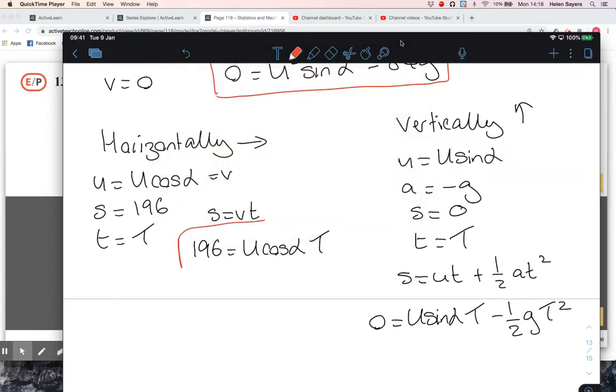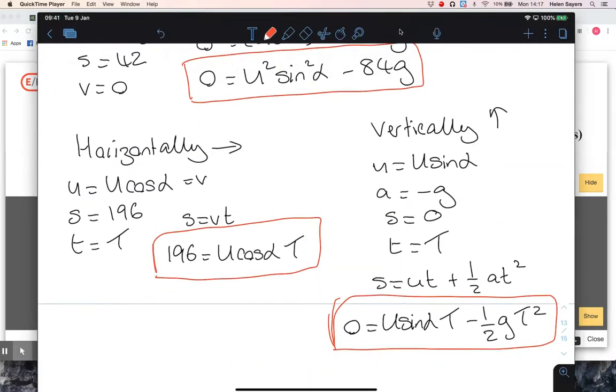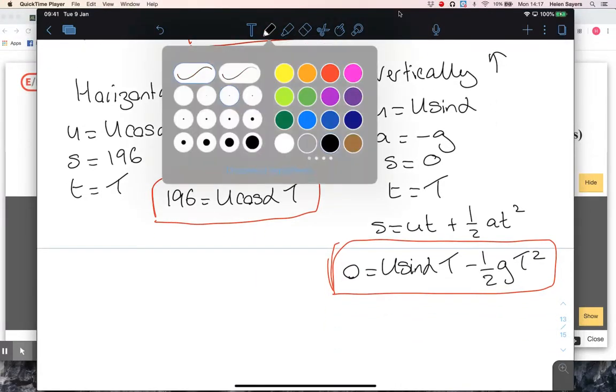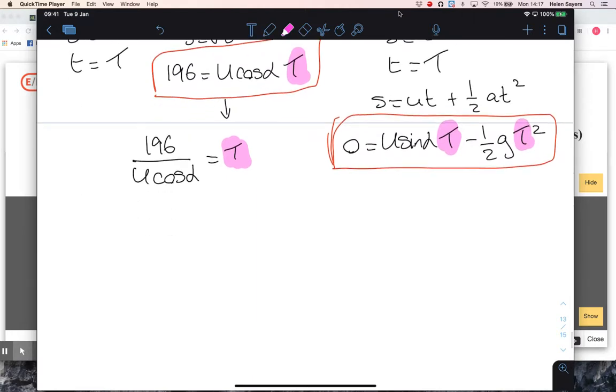Now we've got three equations and three unknowns. My three unknowns are capital U, alpha, and capital T, so this should be solvable. I don't need T, I need alpha and capital U. The sensible way to go is to rearrange this horizontal equation to make T the subject, and then substitute T into that vertical equation. You've had to use this idea in earlier questions, just now we're using it in a really tricky question.